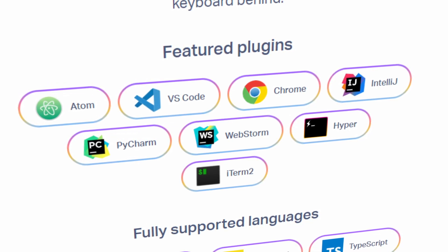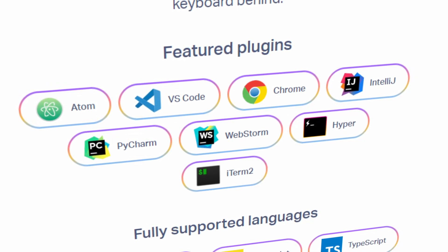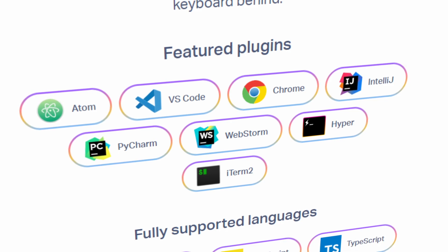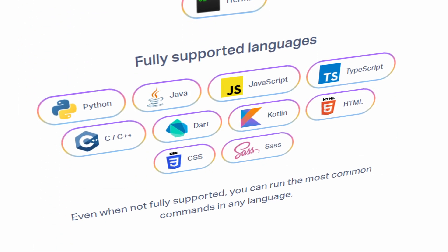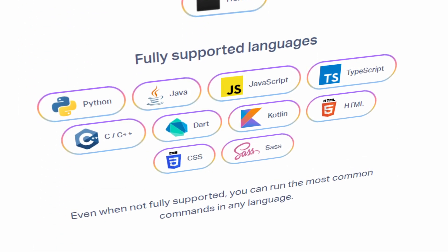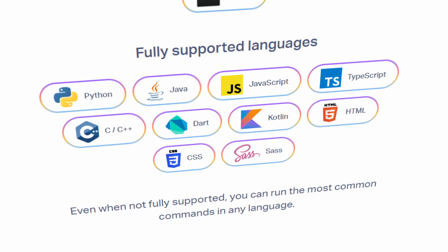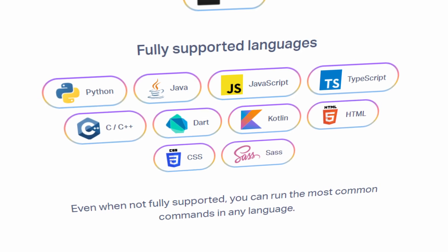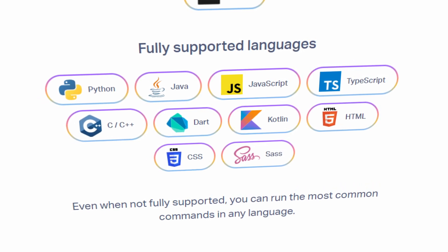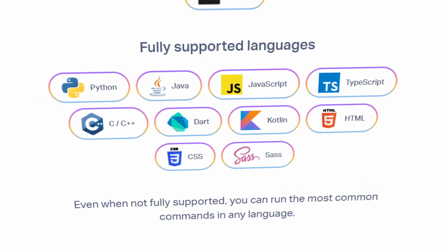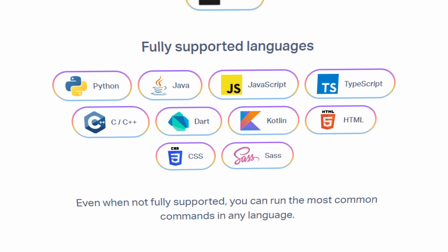And then you've got terminals, Hyper, iTerm2, and Chrome. And then it supports all these different languages: Python, Java, JavaScript, TypeScript, C, C++, Dart, Kotlin, HTML, CSS, and Sass. So go ahead and download it if you want to give it a try as well. It's completely free. And by the way, this video is not sponsored by Serenade.